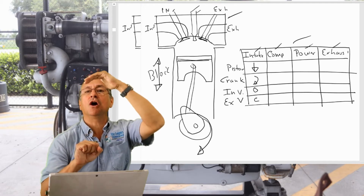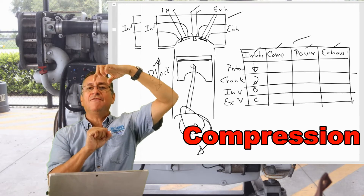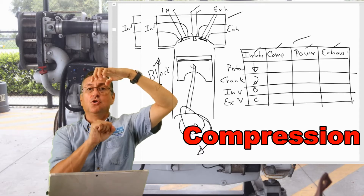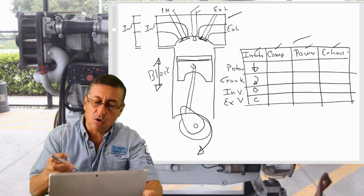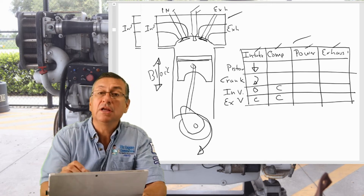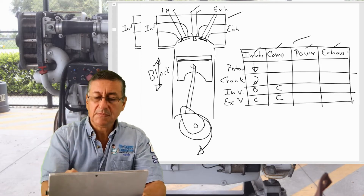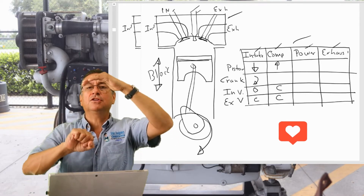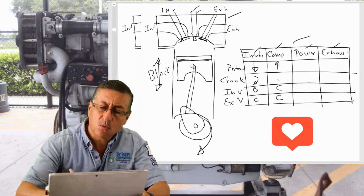The piston starts to go up to produce compression. What happens with the valves in order to compress? Both of them close. In compression, both valves are closed and the piston is going up. The crankshaft rotates another 180 degrees.